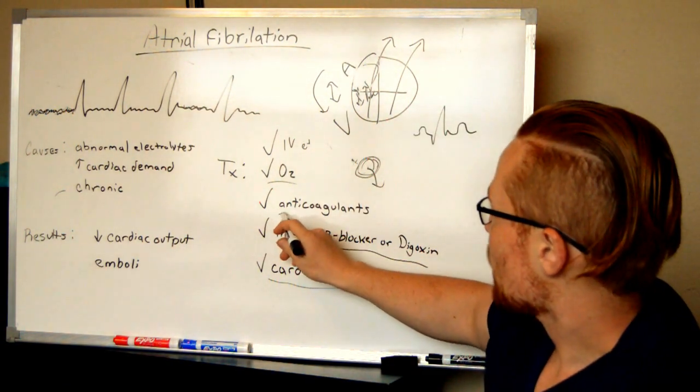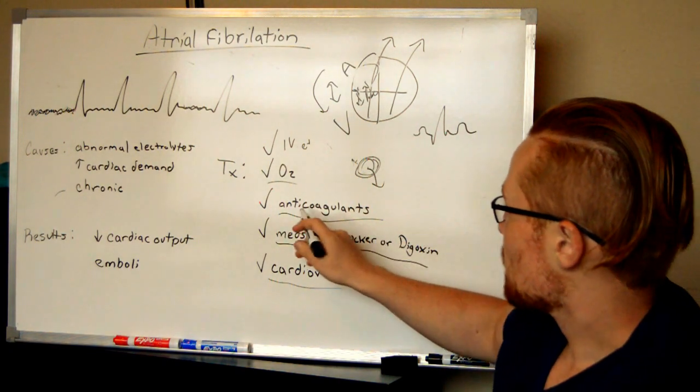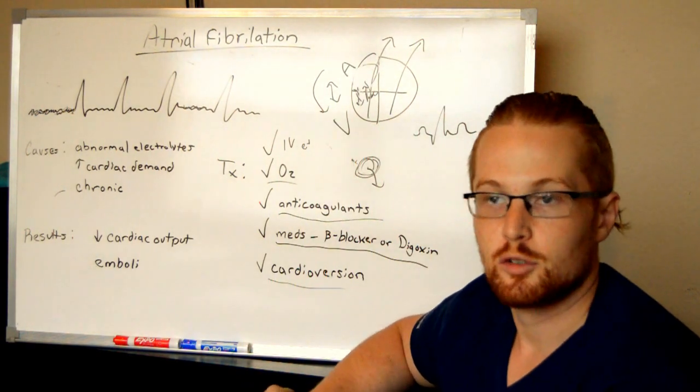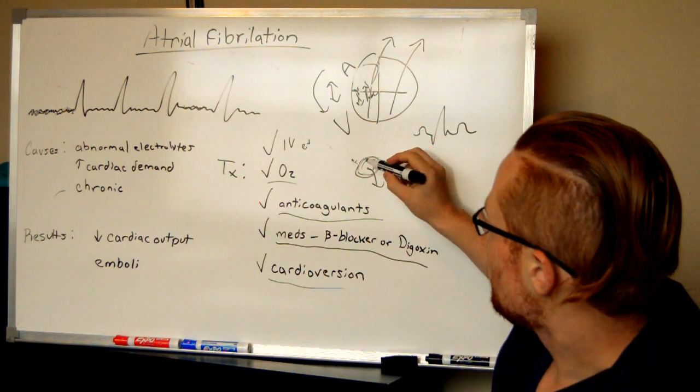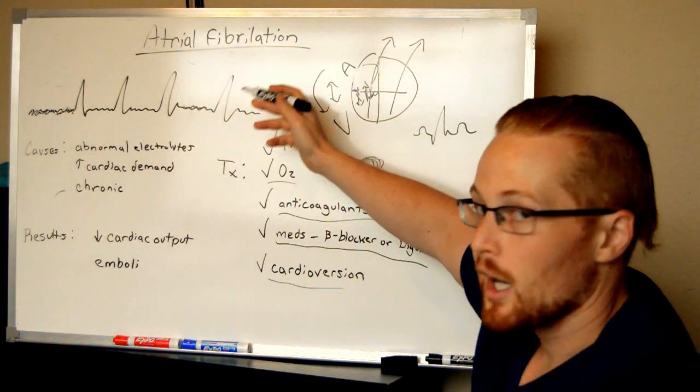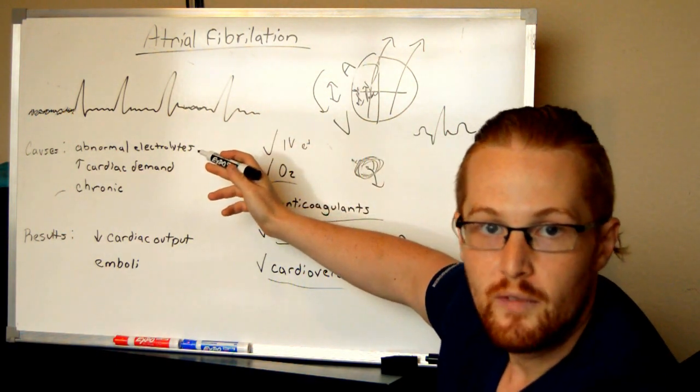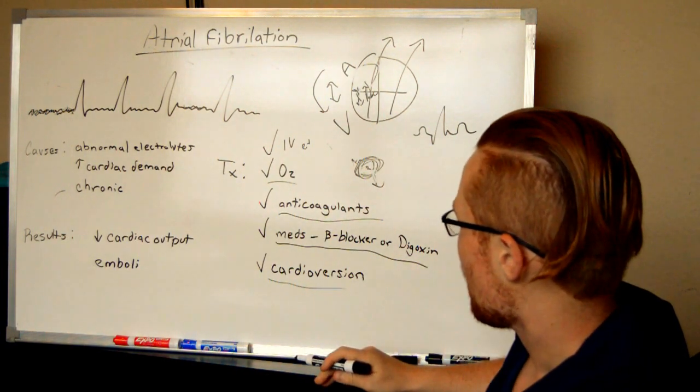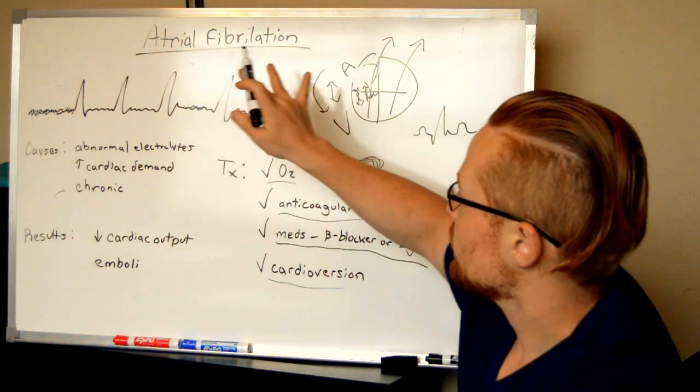And patients on it chronically will probably also be on an anticoagulant, maybe Plavix or Coumadin. This prevents the development of blood clots in the atrium. So they may still be living and walking around day to day with atrial fibrillation, but it will keep them from developing blood clots in their heart. So this is atrial fibrillation.